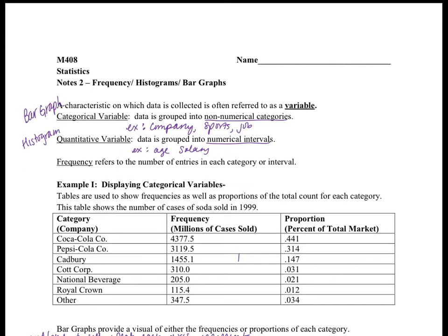A bar graph is used for categorical data that is non-numerical, such as jobs, sports, or brands. Quantitative variables are numerical values like salary, ages, or hours earned at college, and fit into a histogram. When determining what type of graph to make, ask yourself if the data is numerical or categorical.